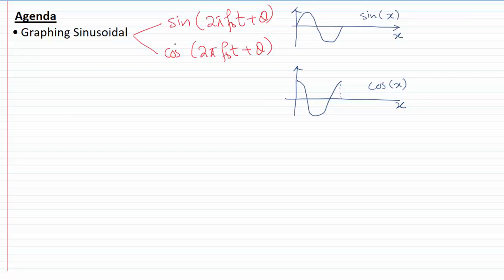Hello everyone. In this video I'm going to share my thoughts on graphing sinusoidals. The sinusoidal is either a sine or cosine waveform. The standard form for a sine waveform is sin(2πf₀t + θ) and the standard form for cosine is cos(2πf₀t + θ).